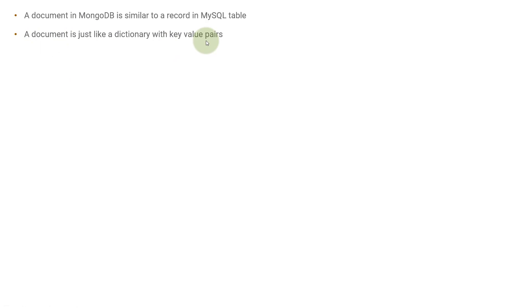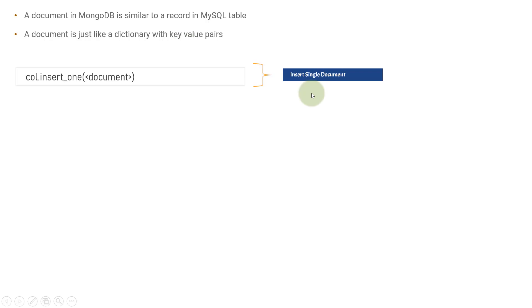In Python, we have a data type known as dictionary. The dictionary contains only keys and values as its entities. So a document is the same as a dictionary containing keys and values. The key is a string and the value can be anything — a string, an integer, another dictionary, or an array. If you want to insert a single document, you need to use the insert_one method on the collection instance.